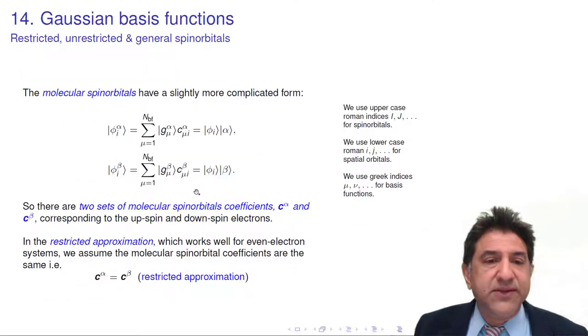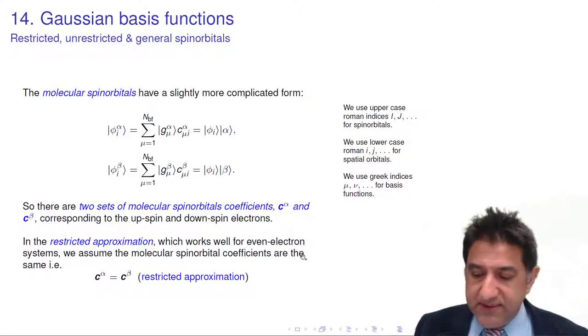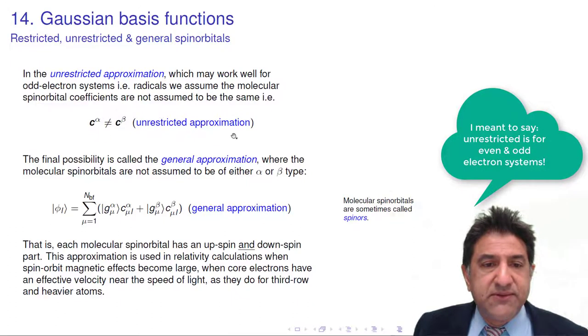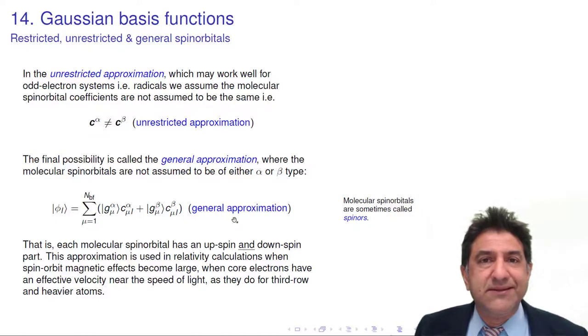So there we have it. We have spin basis functions making molecular spin orbitals. We have the restricted case for even electron systems. We have the unrestricted approximation for restricted and unrestricted, most important for unrestricted. And the general approximation. See you later.